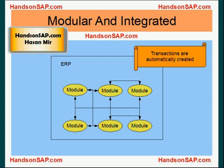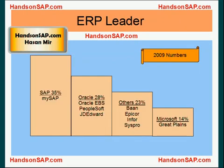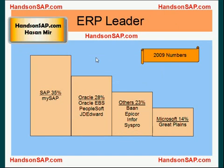The second module can automatically capture that and create transactions. The ERP market looks like this: SAP is the number one leader with 35% market share with its product called MySAP. Oracle has 28% market share with three of its main products: Oracle eBusiness Suite, its flagship ERP software, PeopleSoft, and JD Edwards.